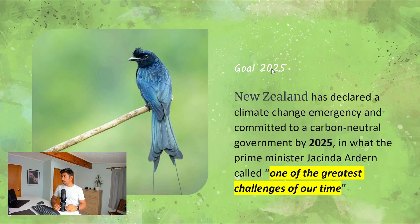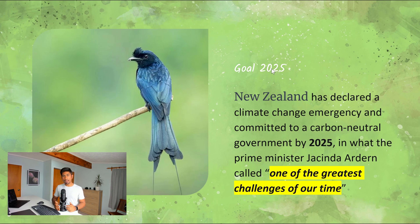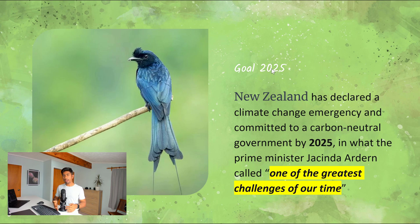New Zealand has declared a climate change emergency and committed to a carbon-neutral government by 2025, in what Prime Minister Jacinda Ardern called one of the greatest challenges of our time. If we don't take action right now, it is very challenging for any government or person to protect this planet, because already a lot of disasters are happening — a lot of forest fires are happening. People in Australia and the US are really witnessing this, and it is going to happen more and more frequently.